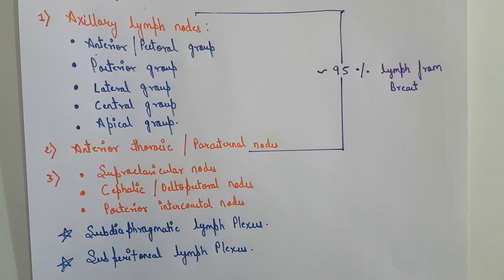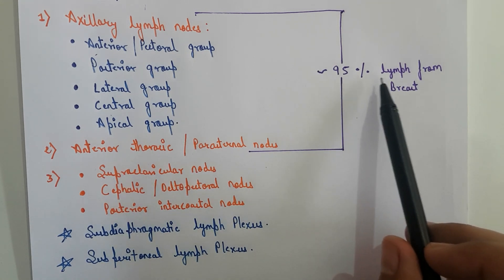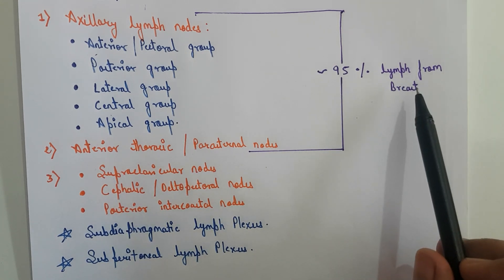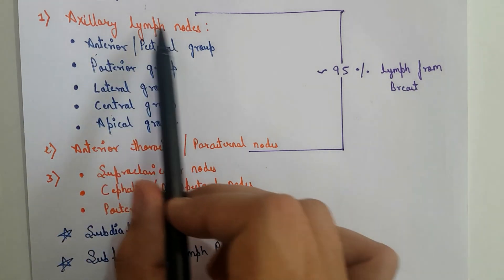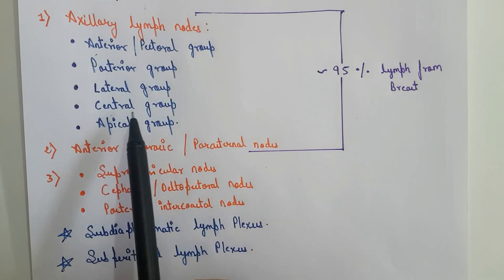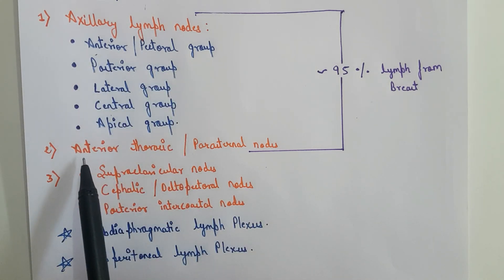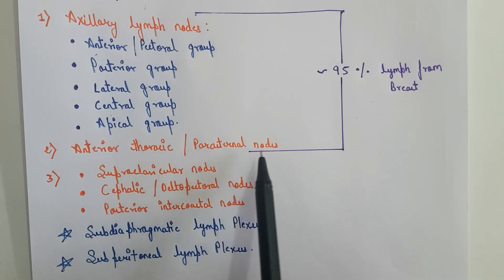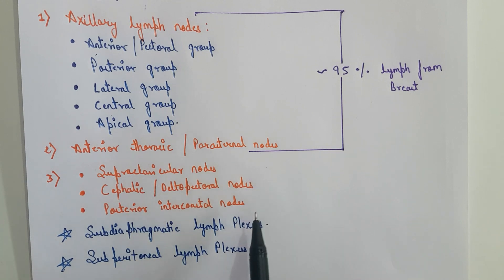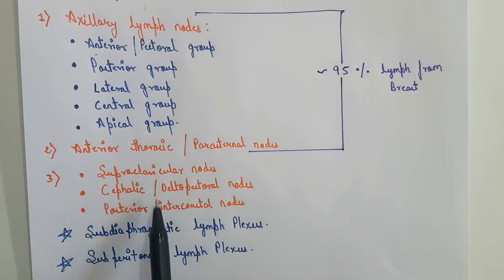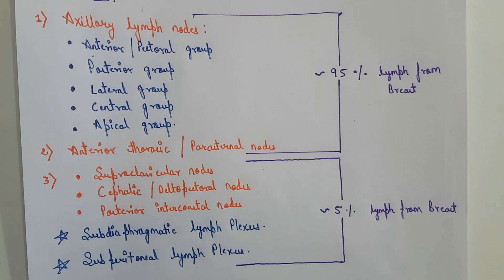As you can see, 95% of the lymph from the breast drains into the axillary lymph nodes and their subdivisions, as well as the anterior thoracic or parasternal lymph nodes. The remaining 5% of the lymph drains into the supraclavicular, cephalic, and posterior intercostal lymph nodes, and into the two lymph plexuses. That was all about the lymph nodes into which the lymph from the breast drains.